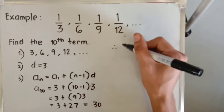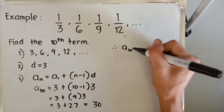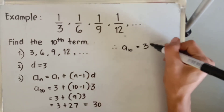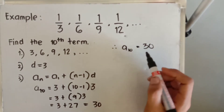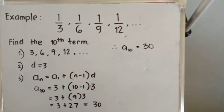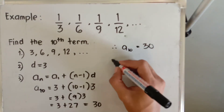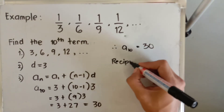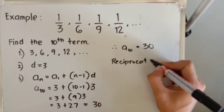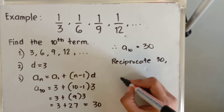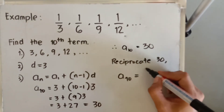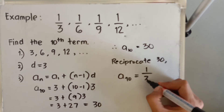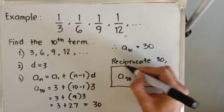Therefore, a sub ten is equal to thirty from the arithmetic sequence. To find the tenth term of the harmonic sequence, simply reciprocate thirty. So the tenth term of the harmonic sequence is equal to one over thirty.